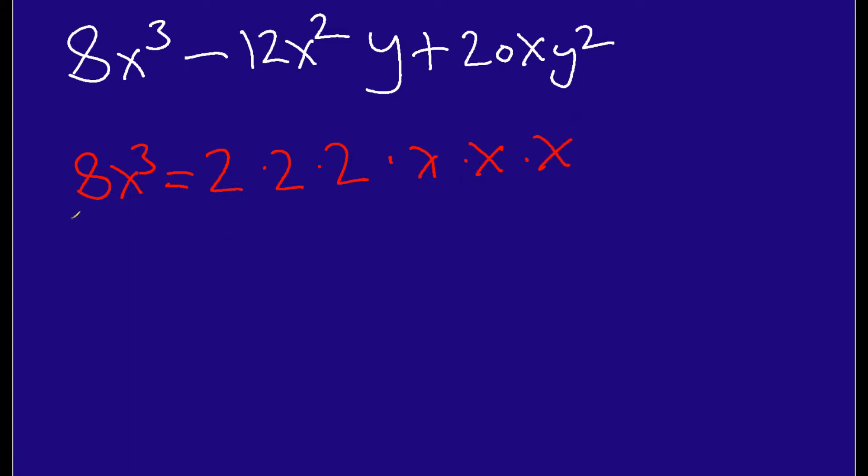Now, if I break down this minus 12x squared y, I'm going to get 2 times 2, but this time 3, and then it's going to be x, x, and then y. And then, if I do the 20xy squared, I get 2 times 2 times 5. Now, notice how I'm always trying to use the smallest numbers possible. That helps with simplicity.